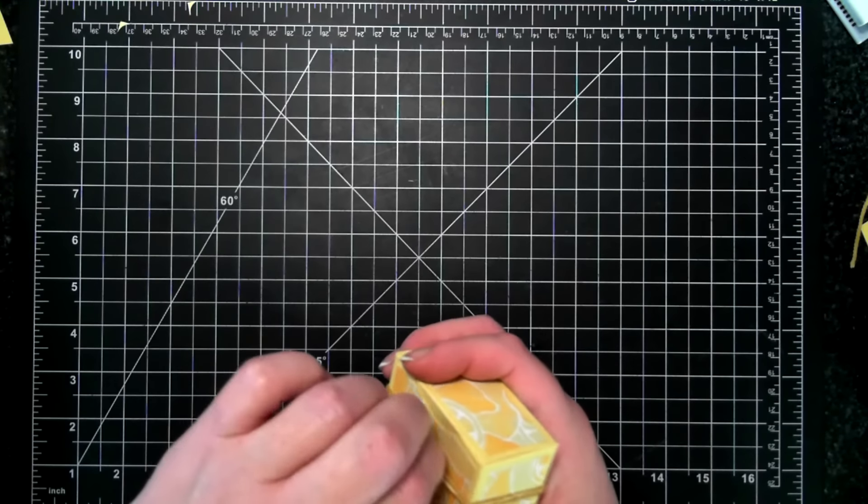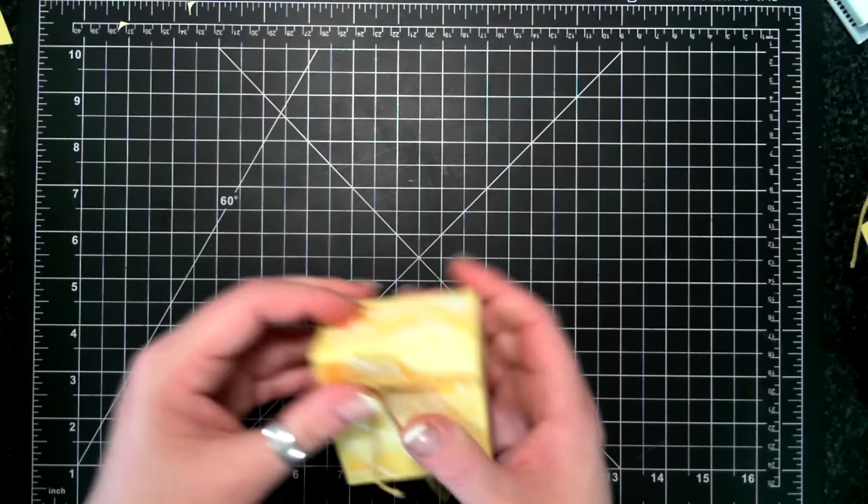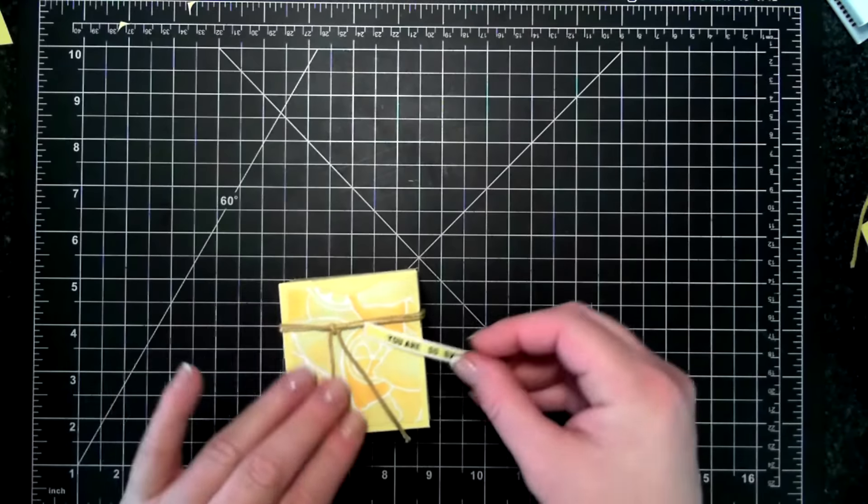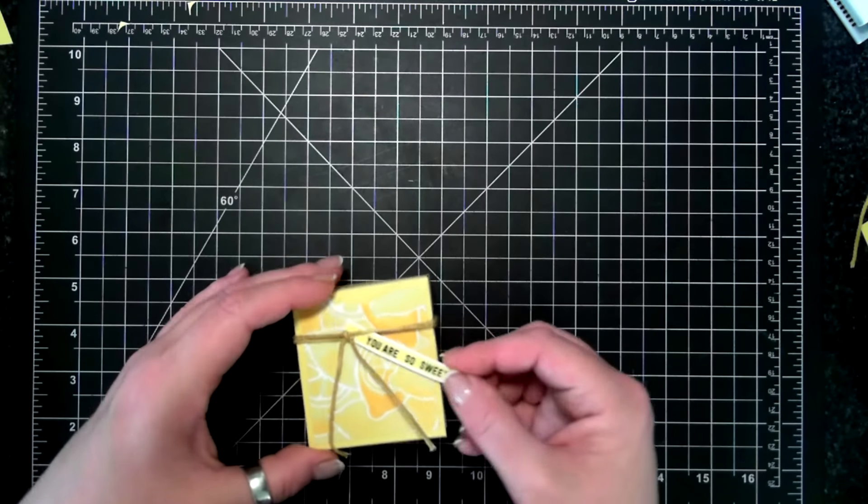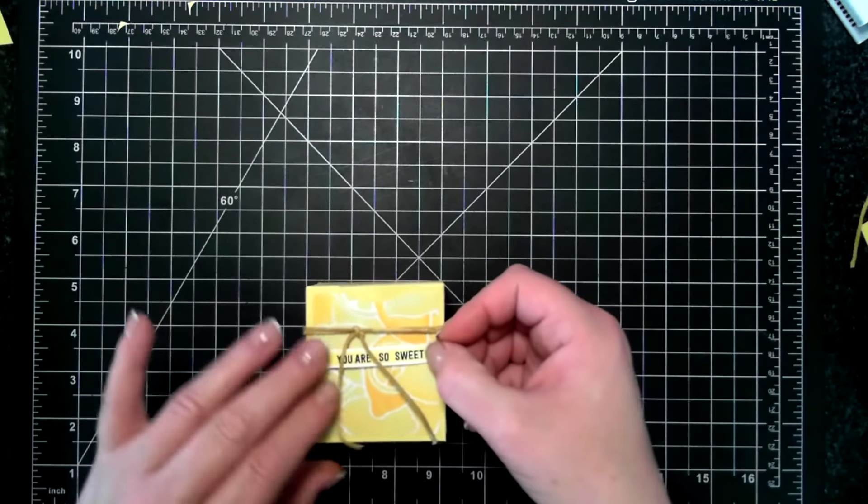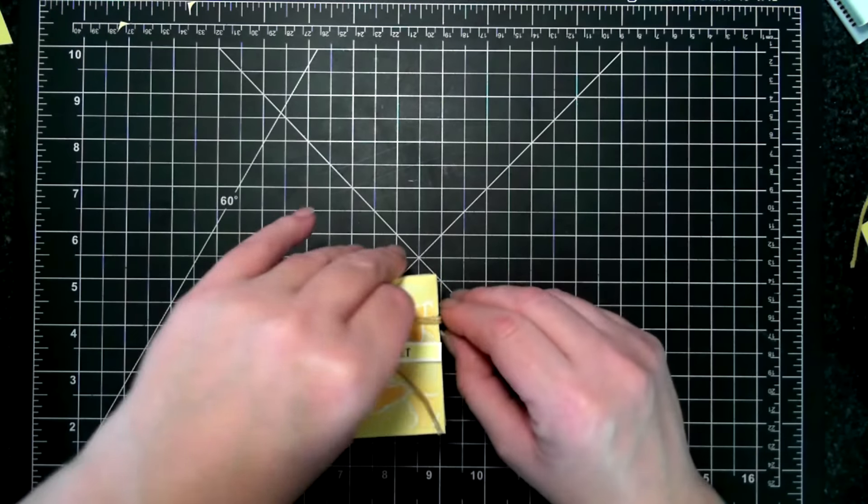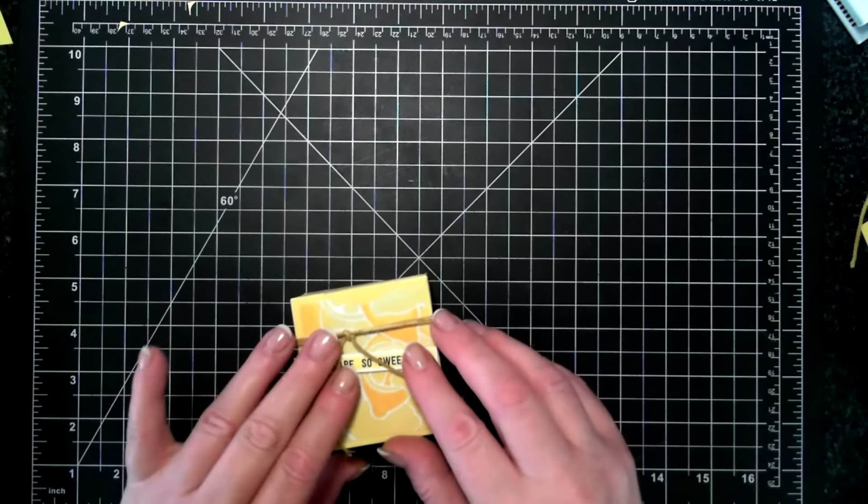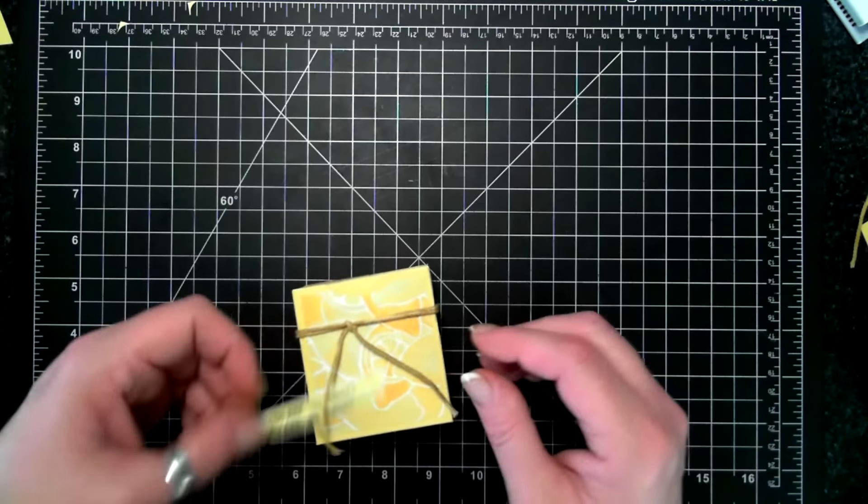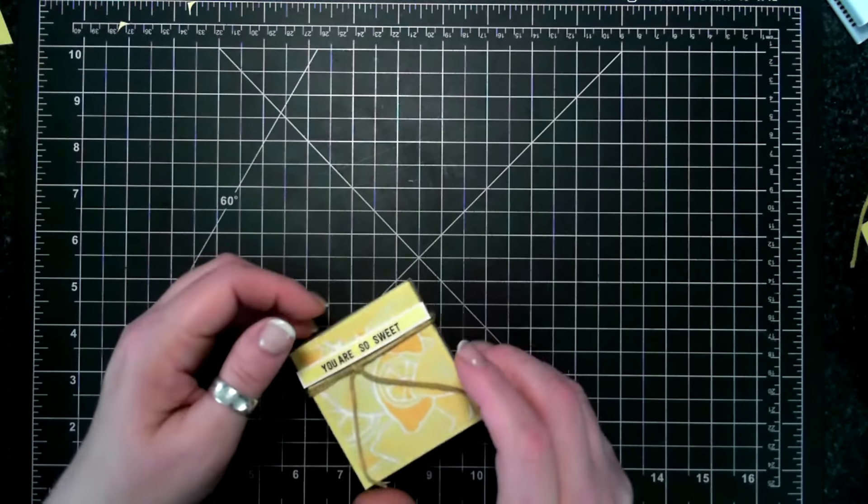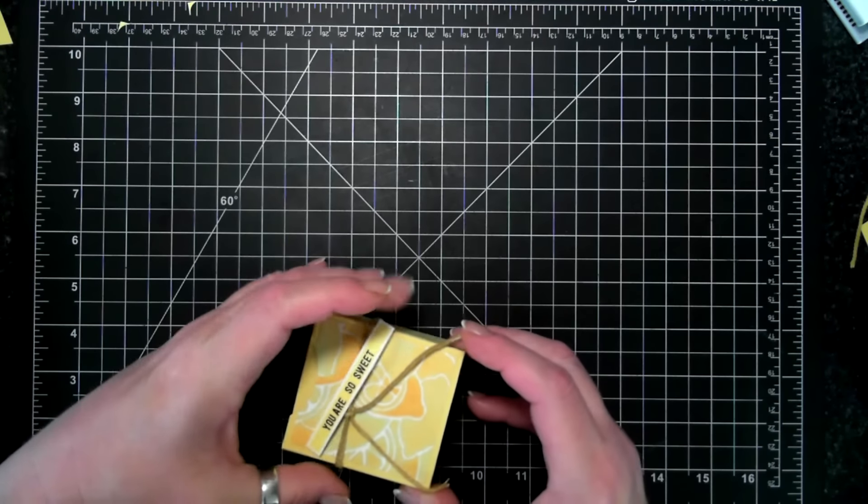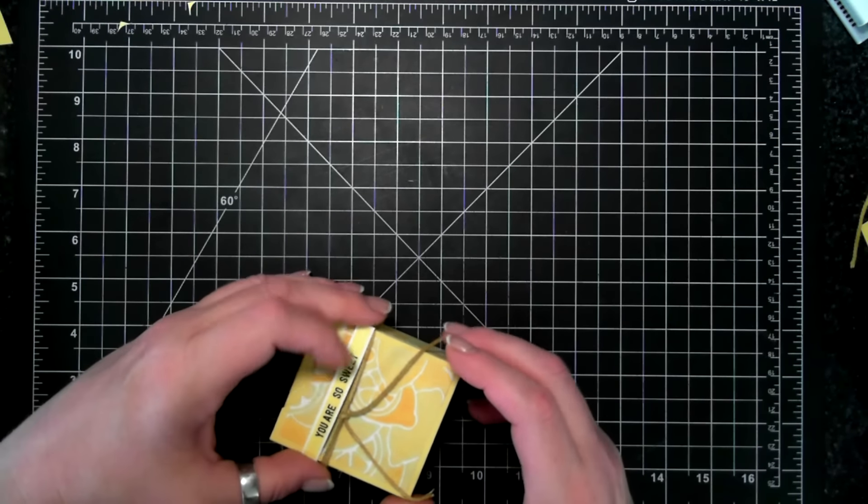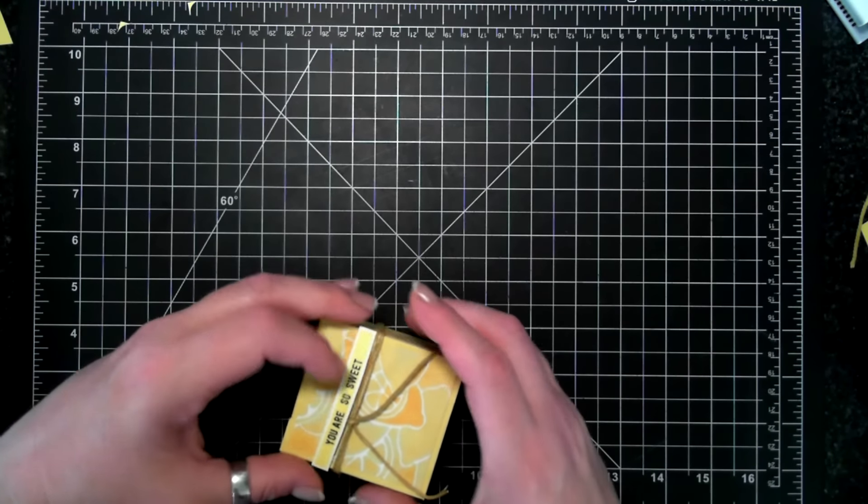I'm just going to jig it over to the side, perfect. And then I have this 'You Are So Sweet' sentiment, and that comes from the Thoughtful Banners stamp set, and I stamped in Daffodil Delight.